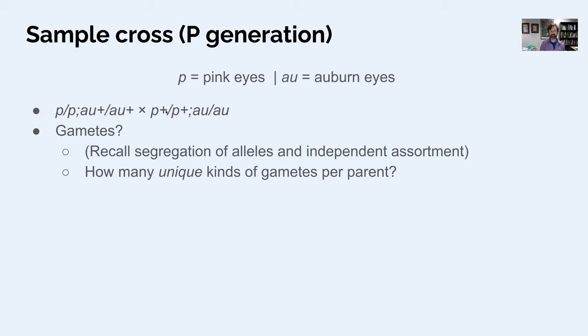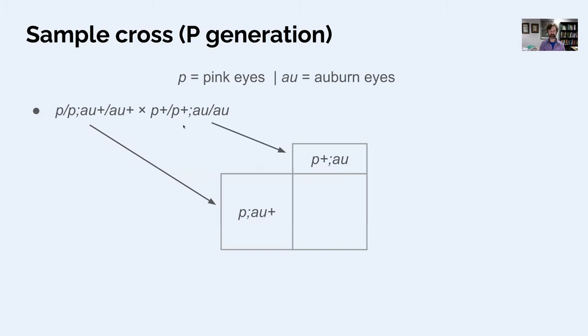The auburn eyed parent is going to contribute a p plus to the gamete and an au to the gamete. So it turns out with true breeding or homozygous individuals, there's only one kind of gamete that these parents can make. So that's handy.